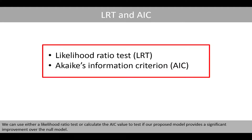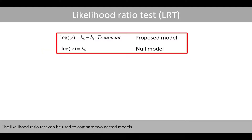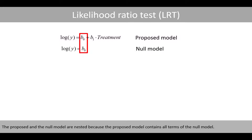We can use either a likelihood ratio test or calculate the AIC value to test if our proposed model provides a significant improvement over the null model. The likelihood ratio test can be used to compare two nested models. The proposed model and the null model are nested because the proposed model contains all terms of the null model.